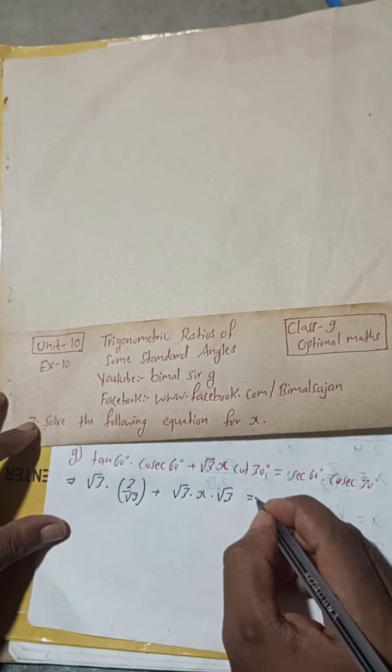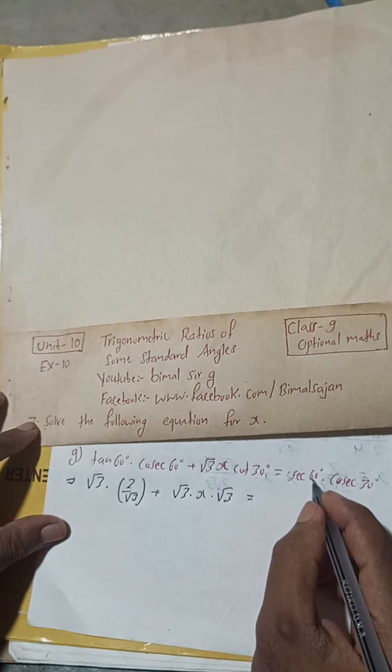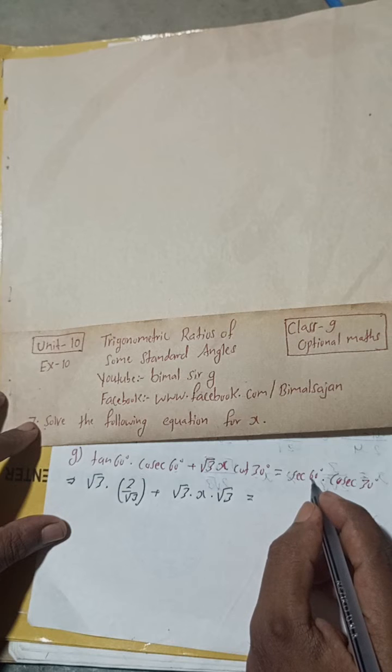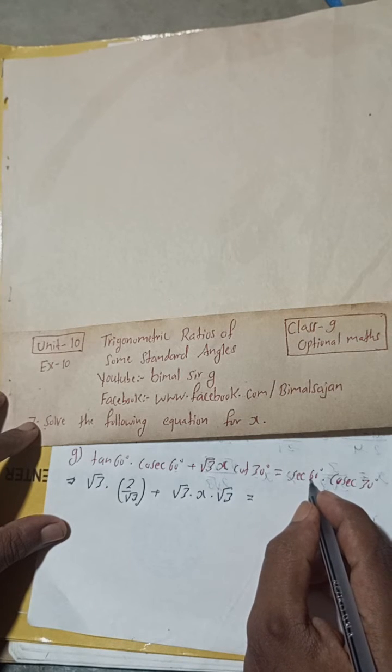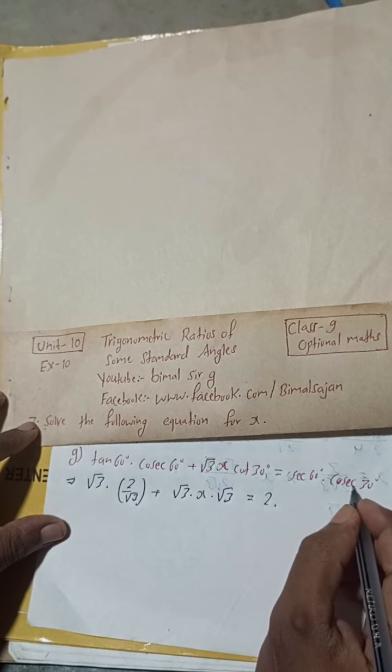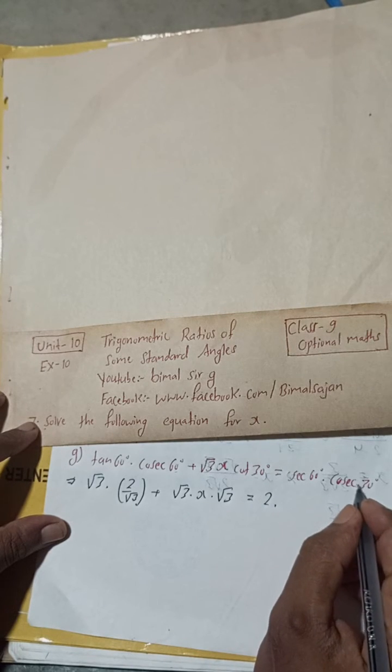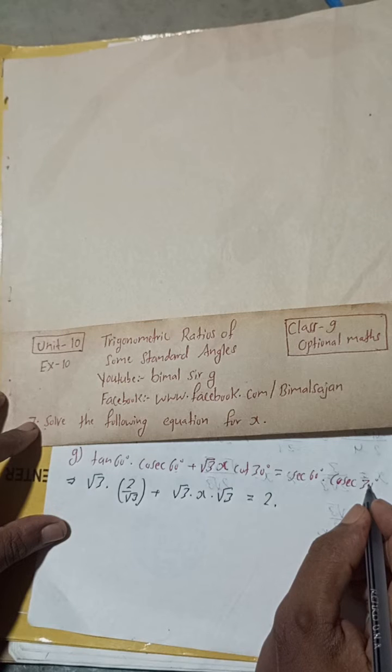This is equal to sec 60, so sec 60 is 2, into cosec 30. Sin 30 is 1 by 2, so cosec 30 is 2. So sec 60 is 2 into cosec 30 is 2.